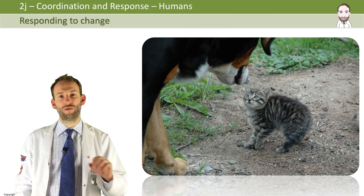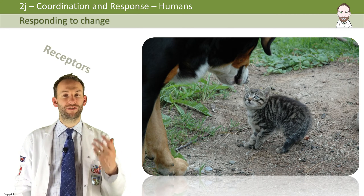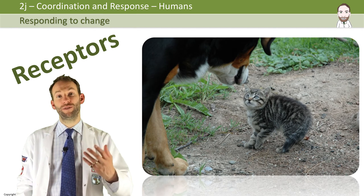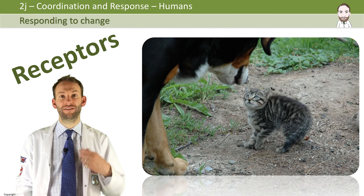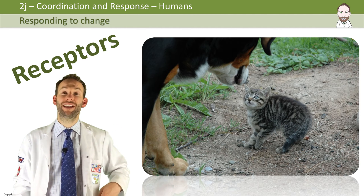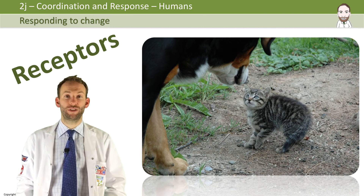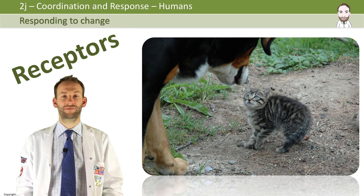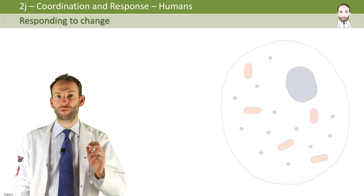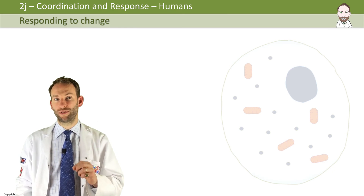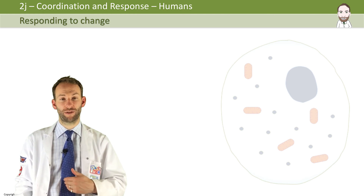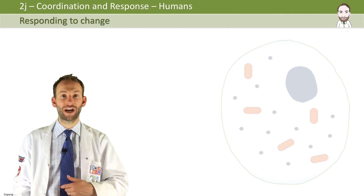Organisms have evolved all different amazing types of receptors to be able to detect these stimuli. In humans, obviously we've got things like the eyes and the ears and all our senses, and that helps us to detect different stimuli and then coordinate the suitable response to them, and that should keep us alive longer. Not only do organisms need to respond to changes in their external environment, but they also need to respond to changes in their internal environment — what's going on inside their bodies as well.